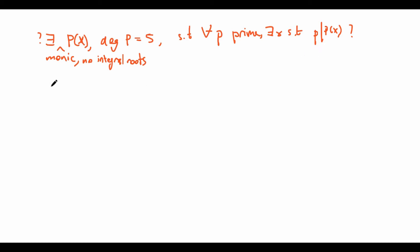The most obvious example might be p(x) equals x, or p(x) equals any linear factor times some other polynomial. Unfortunately, we cannot have linear factors here because the polynomial is monic and it can't have integral roots, so therefore there cannot be any linear factors. So all the factors we have are going to be quadratic or higher.